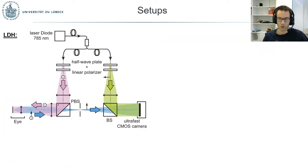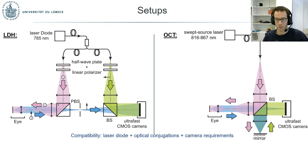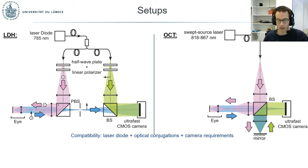The setups for these two imaging techniques are as follows: on the left is LDH and on the right is OCT, and you can see that there are many similarities between the two — they are quasi-identical, which makes them compatible. They both use a laser diode and the same optical conjugations, so the light is focused in the front focal plane of the eye, and the light backscattered is combined with a reference beam onto an ultra-fast camera. The requirements in terms of camera frame rates are also similar, about 60 kHz.